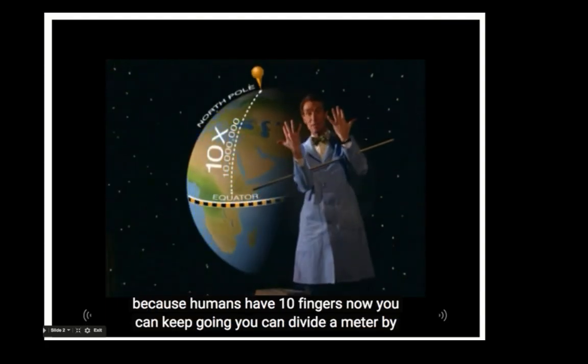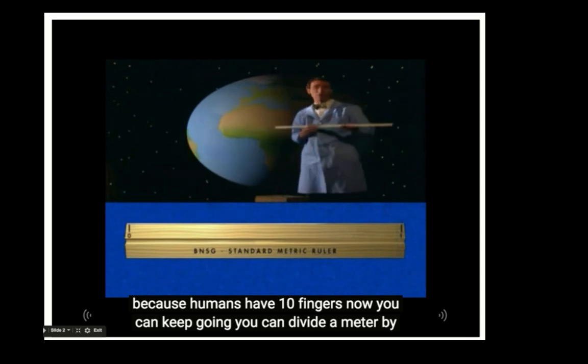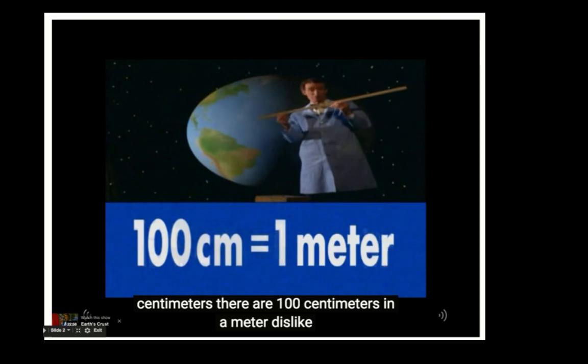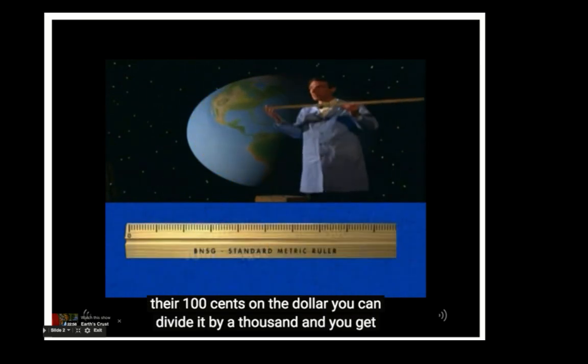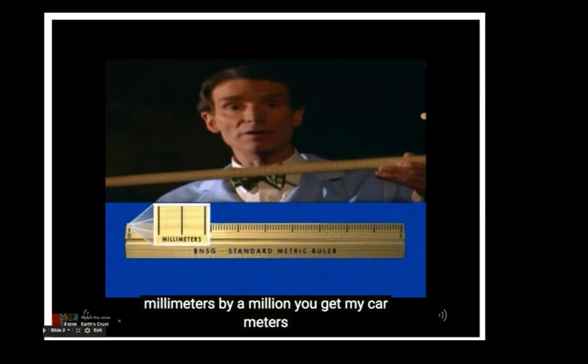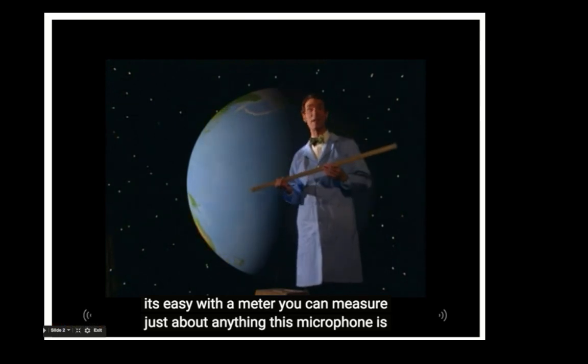We use tens because humans have ten fingers. Now you can keep going. You can divide a meter by ten and ten again and you get centimeters. There are a hundred centimeters in a meter, just like there are a hundred cents in a dollar. You can divide it by a thousand and you get millimeters, by a million and you get micrometers. It's easy. With a meter you can measure just about anything.